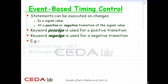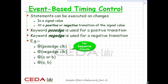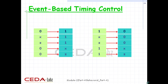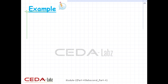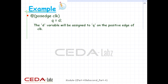Clock is used for sequential circuits, so positive or negative transition is used in that case. In combinational circuits, signal values are used. The default posedge events are: 0→1, x→1, z→1, 0→x, and 0→z. The default negedge events are: 1→0, x→0, z→0, 1→x, and 1→z. These are some examples showing event-based timing control. The first example is executed only when there is a positive transition of clock.